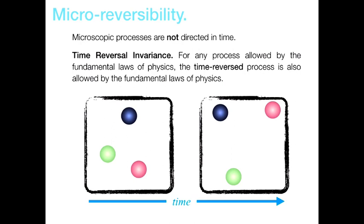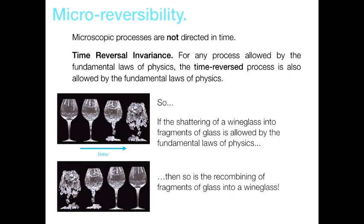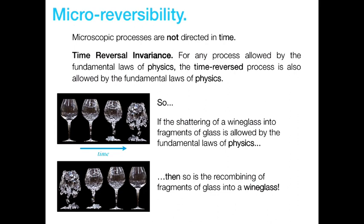For any process allowed by the fundamental laws of physics, the time-reversed process is also allowed by the fundamental laws of physics. So if this is an allowable evolution, then this is also an allowable evolution. Extrapolating from that, if we think of wine glasses as being made up of microscopic particles, and if the laws governing these wine glasses are fully recoverable from the laws governing the microscopic particles, then if this process is possible, the time-reverse should be equally possible.